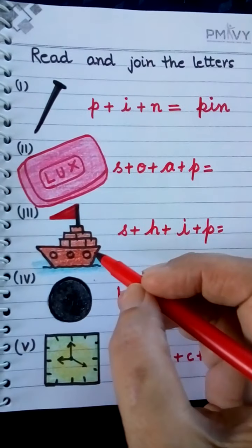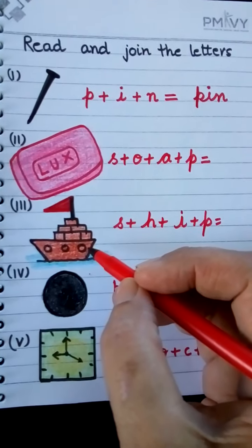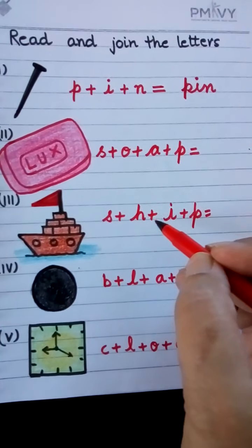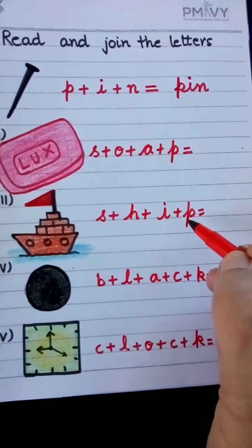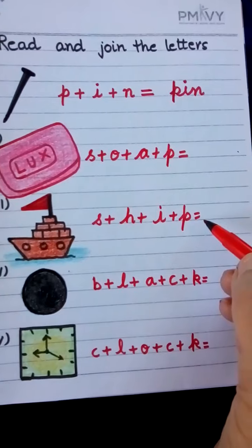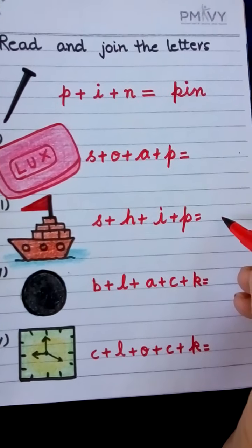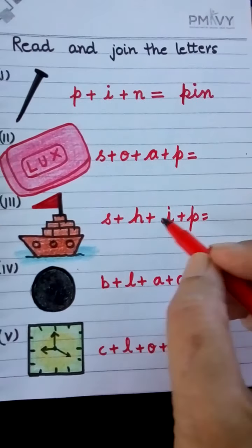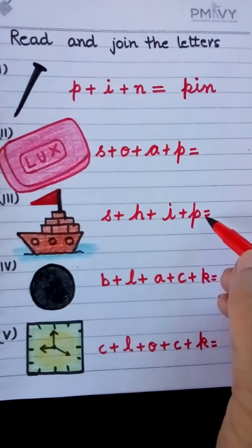This is the picture of Ship. S-H-I-P. Ship. You will write here Ship. This is a four-letter word.